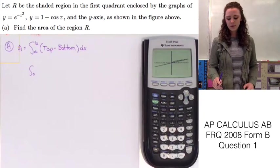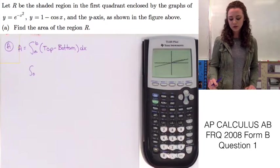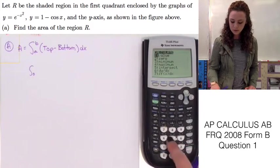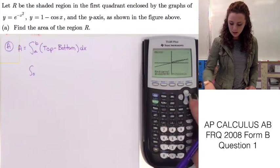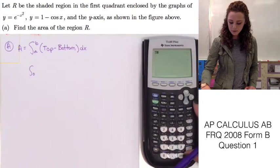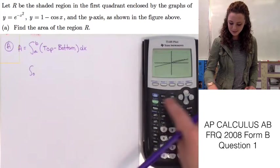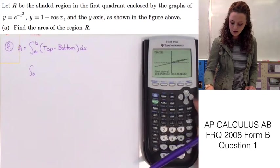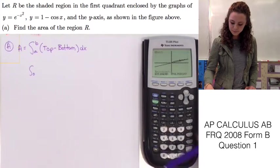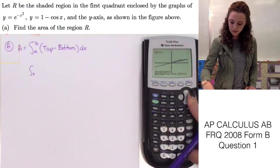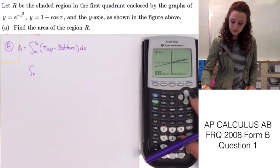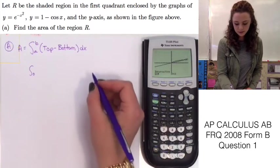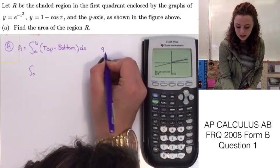We can find A and B by finding the two points of intersection of these graphs. We know that both graphs pass through the origin, so the bottom limit is zero. We can find the top limit by using the calculation function on our calculator. Second, trace, and we'll use intersect. Select the first curve. Oh shoot. Start over. Select the first curve and select the second curve. It tells us that this other point of intersection is at 9, 3.